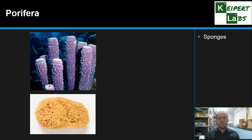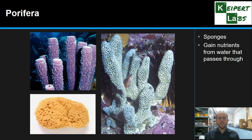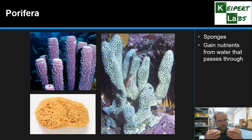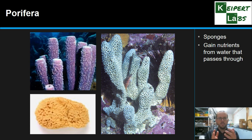Now we're going to look at sponges, or porifera — from the same word as porous, meaning things that have holes in them. They gain nutrients from the water that passes through them, picking up dissolved nutrients as water moves through their structure. They have simple-looking bodies but a fair bit of internal structure that allows nutrients to be picked up — most of what makes up their body is inside, away from what you can see.